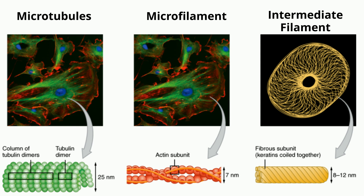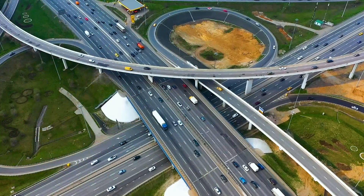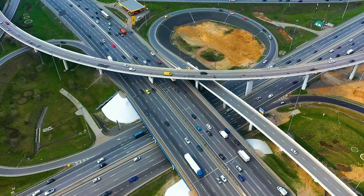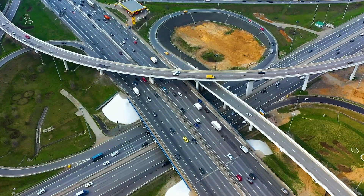Microfilaments are fine thread-like protein fibers. They are composed predominantly of a protein called actin. These filaments create surface highways for the vesicles that need to be moved in the cell and may even hold organelles in place.